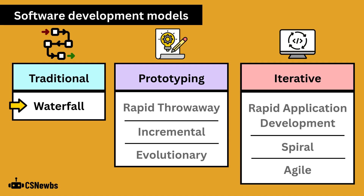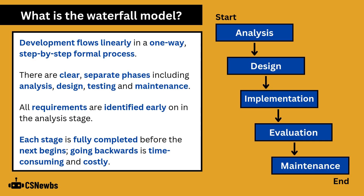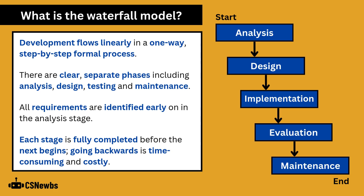The waterfall model is the most common example of a traditional software development model. In the waterfall model, development flows linearly in a one-way, step-by-step formal process. There are clear separate phases including analysis, design, testing and maintenance. The number of stages and the content of each stage may be different for each project, and you may see diagrams online with different words like requirements for analysis or verification for evaluation.